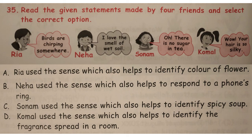Last question: read the given statements made by the four friends and select the correct option. The correct answer is option C. If you need more question papers or previous Olympiad question papers, please let me know in the comment section. Thanks for watching Kids A to Z.